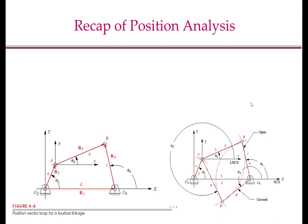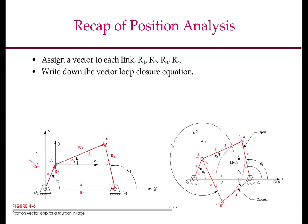Before we proceed, let us first recap the four-bar position analysis. The first step was to assign a vector to each one of the links, as shown in the figure. The second step was to write down the vector loop closure equation, which becomes R2 plus R3 minus R1 minus R4 equal to 0. Recall that there were some choices involved in the first step as to which direction we would assign to each vector, but once we have chosen this, the rest of the steps become deterministic.